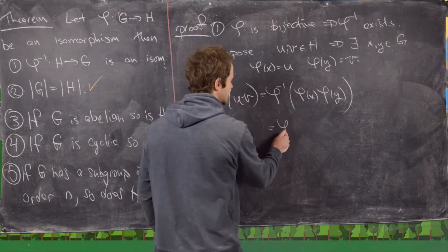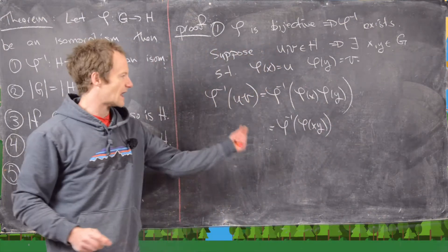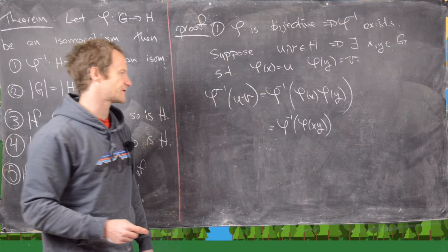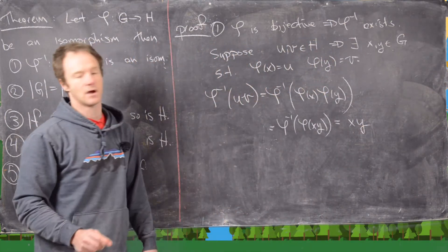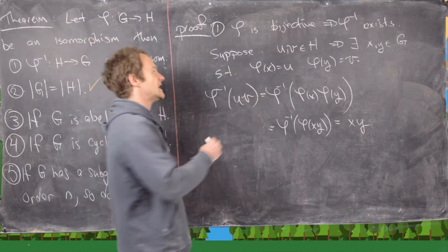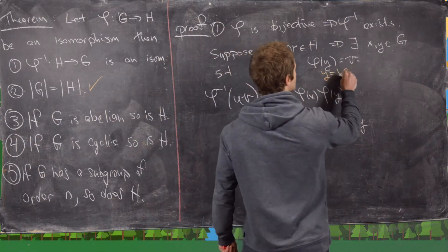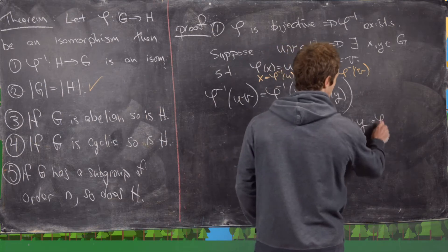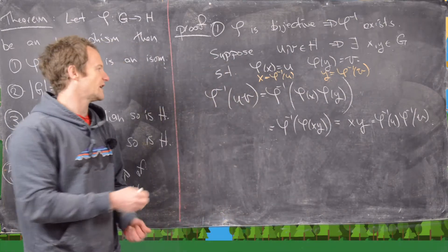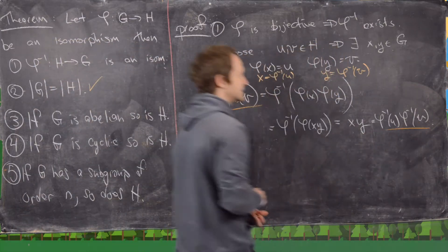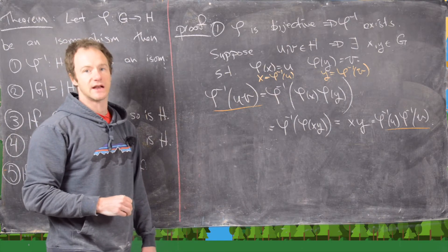Now we look at phi inverse evaluated at UV, which equals phi inverse evaluated at phi(X) times phi(Y). Since phi is an isomorphism, we can combine these: phi inverse of phi(XY). The phi inverse and phi cancel as inverse functions, giving us X times Y. Since X equals phi inverse of U and Y equals phi inverse of V, this equals phi inverse(U) times phi inverse(V). Reading the extreme left and right hand sides, we have shown the homomorphism condition for phi inverse to be an isomorphism.